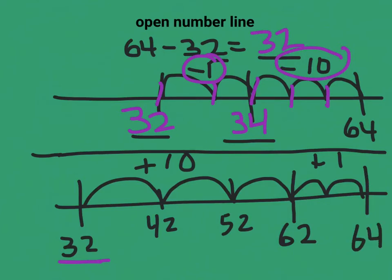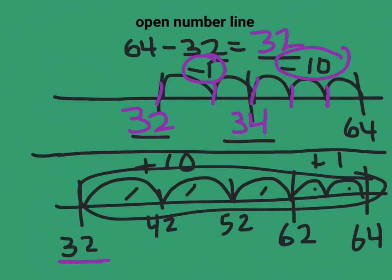So now, I've jumped 10, 20, 30, 31, 32. And that's the answer. You've got to count all those jumps to get the answer. And again, the answer is 32.